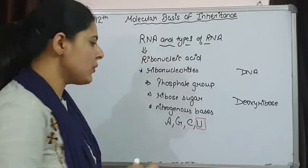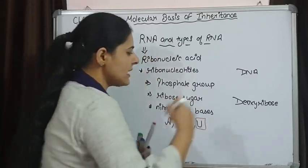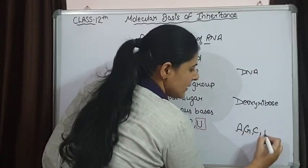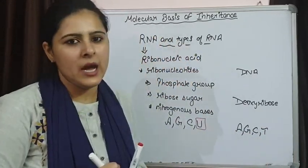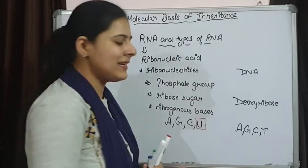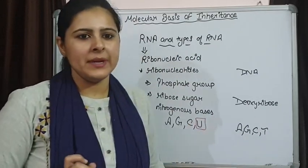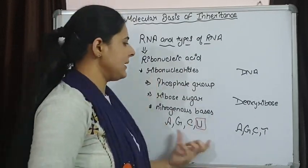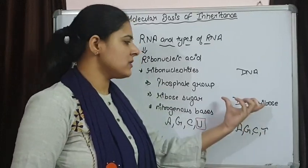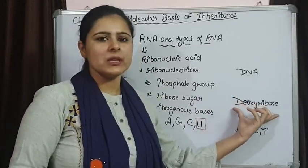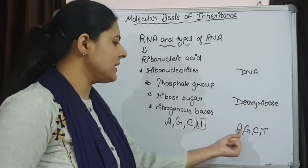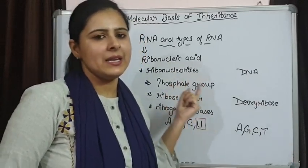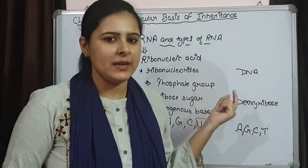While in DNA we say adenine, guanine, cytosine and thymine are present. So there is a difference in one pyrimidine — that is the difference between RNA and DNA. There is a difference in the sugar that is present and one of the nitrogenous bases is also different in DNA and RNA.